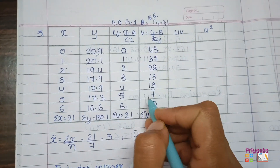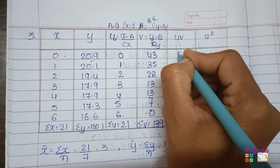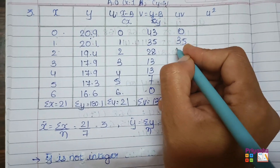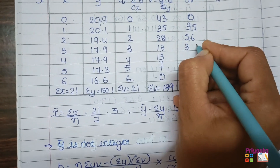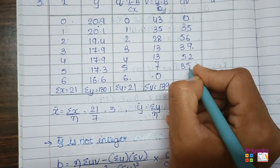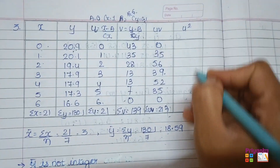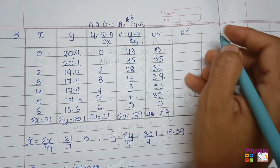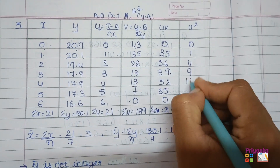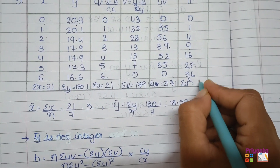Next, the uv column: 0×43=0, 1×35=35, 2×28=56, continuing the calculation. Total sigma uv = 217. For u squared: 0, 1, 4, 9, 16, 25, 36. Total sigma u squared = 91.